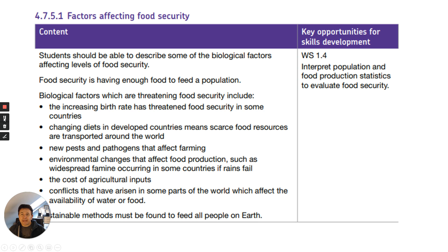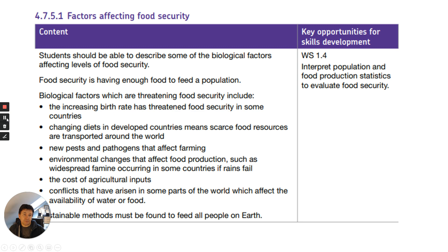So let's do a quick spec check. We're going to look at some biological factors affecting levels of food security. There are some economic and political issues in there as well, but we will go through and talk about what food security is and the factors that affect it. We need to be able to interpret population and food production statistics to evaluate food security — more than likely involving some math skills, for example looking at percentage changes.